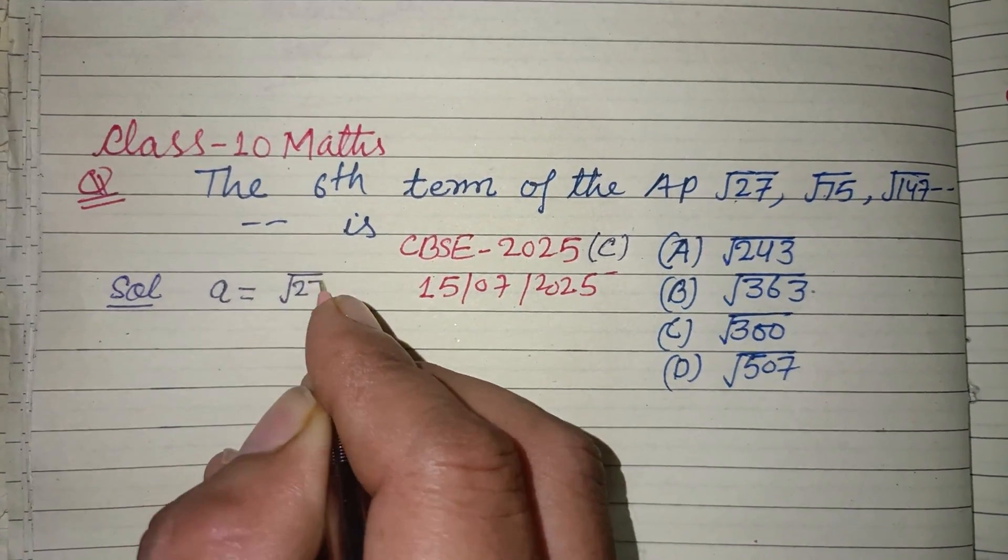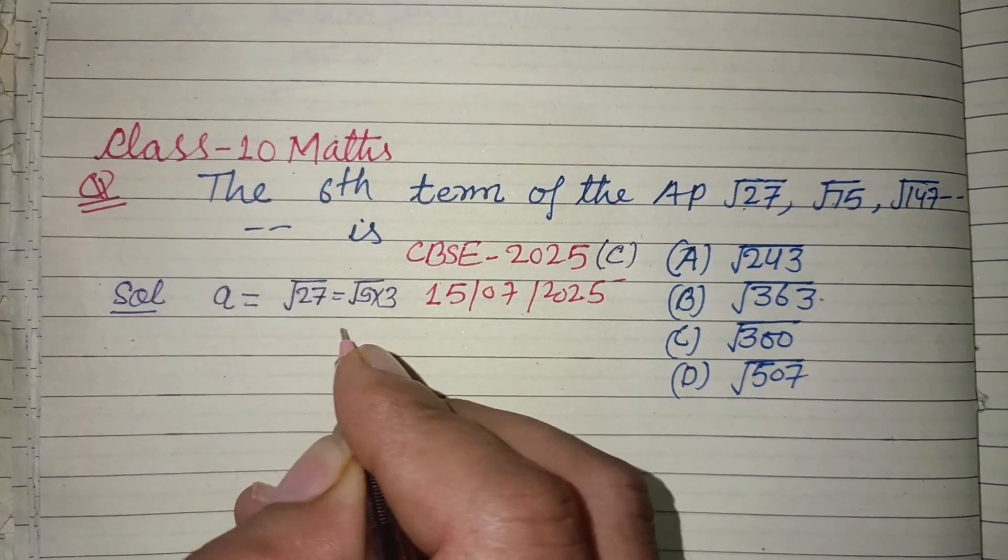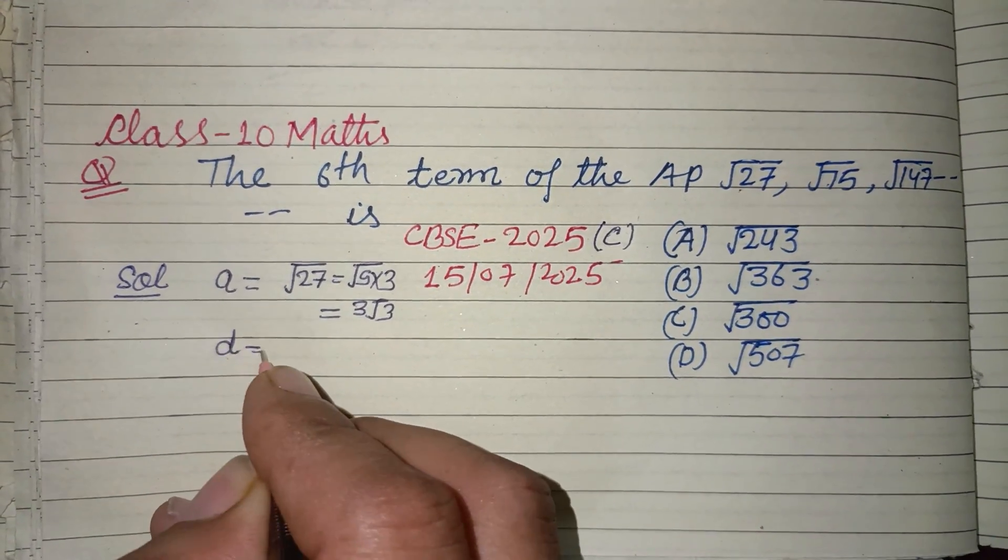is √27. We write it as √(9×3), that is 3√3. And d, which is